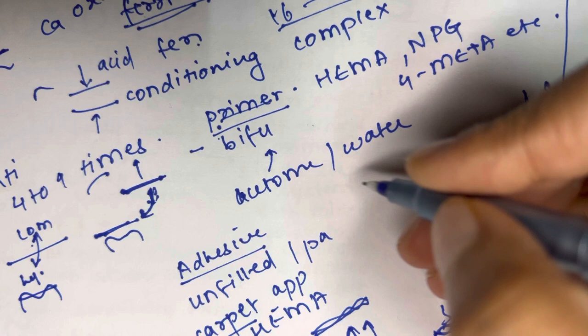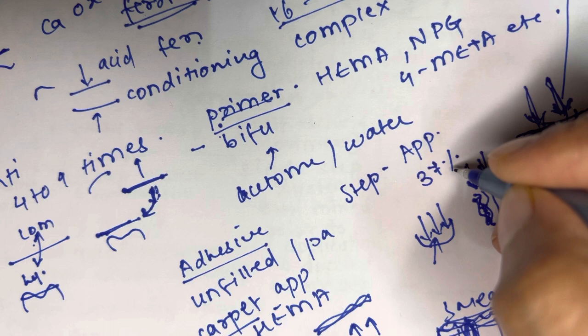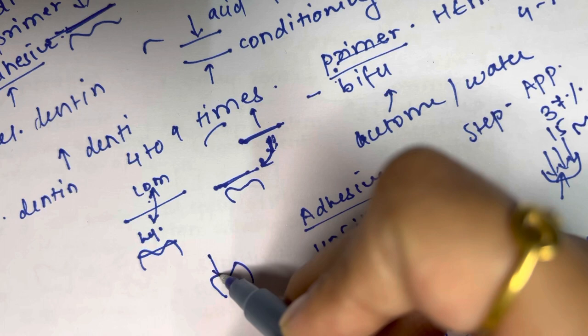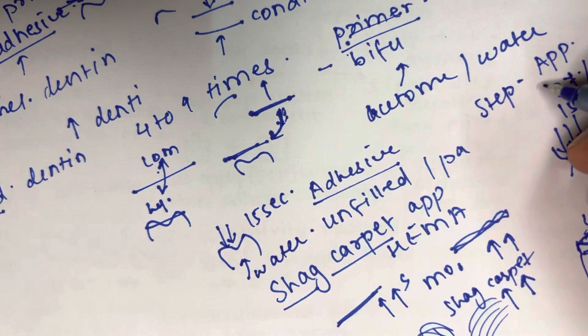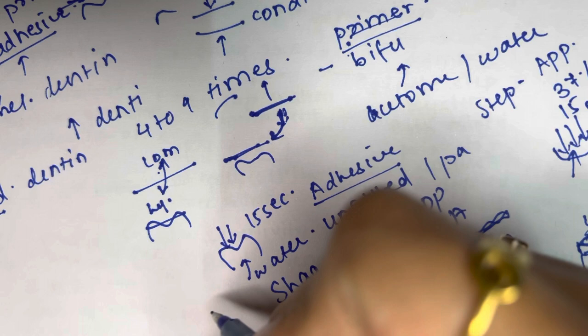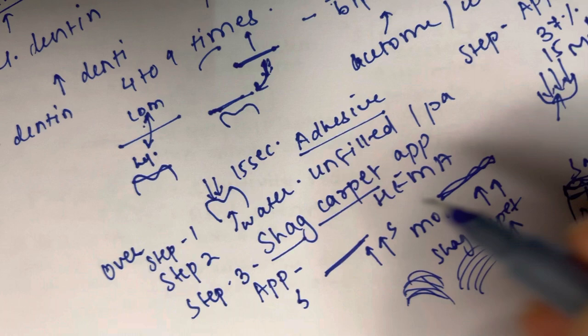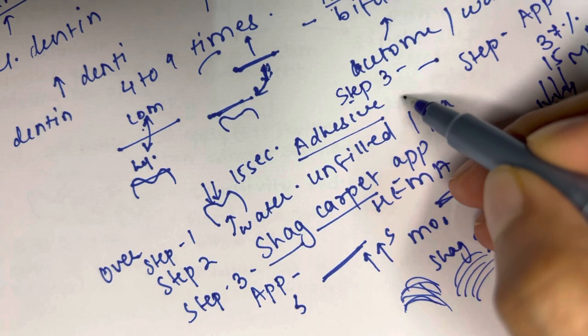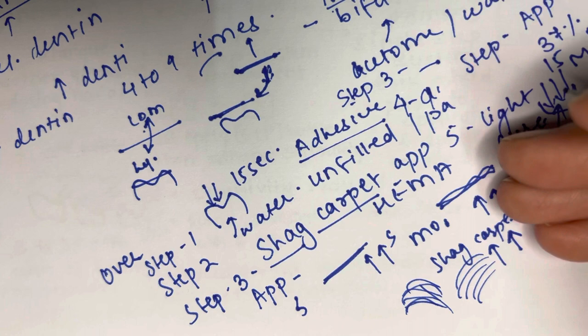Clinically, the fourth generation bonding agent is applied as follows: Step 1 — apply 37% phosphoric acid etchant for 15 seconds on the tooth surface. Step 2 — rinse thoroughly with water and dry using the appropriate methods to avoid over-drying. Step 3 — apply primer for 15 seconds. Step 4 — apply adhesive. Step 5 — light cure the adhesive. These are the five steps of the fourth generation dentine bonding agent.